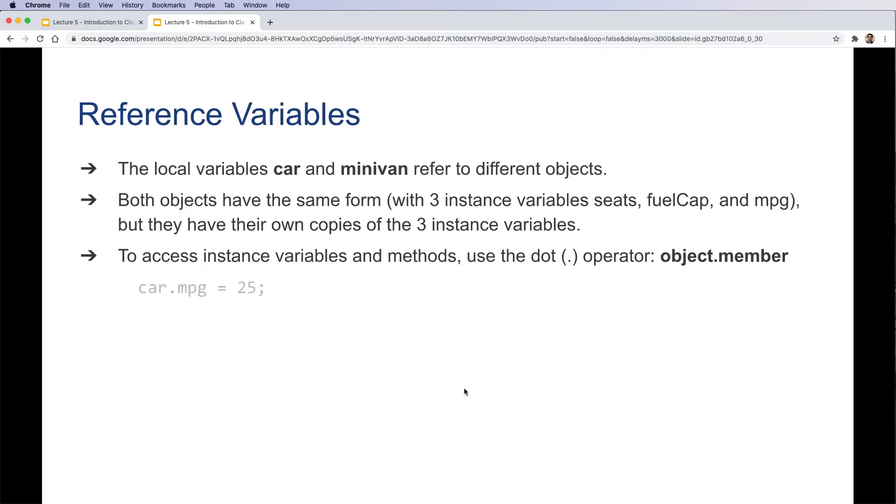To access instance variables and methods, use the dot operator. So object dot its member, for example, car.mpg or car.fuelCap. You can both set or just access the members.